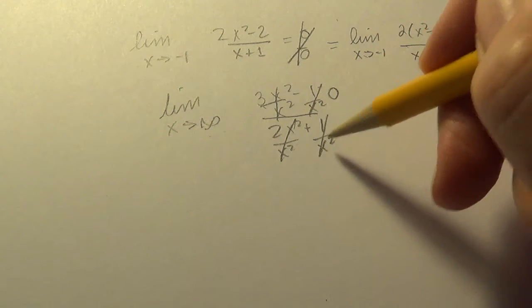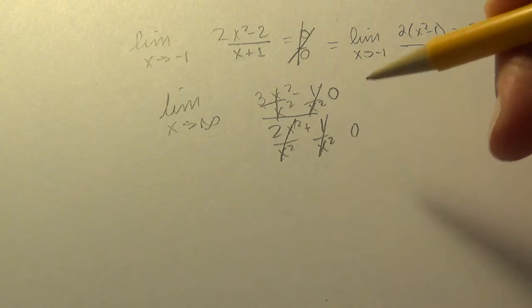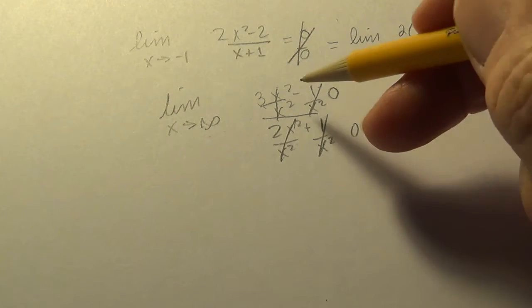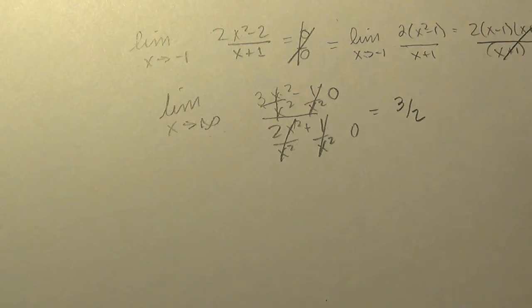So the little trick we had was divide each one by the greatest power of the variable in the denominator - sometimes in the numerator but usually the greatest power in the denominator. This one they're the same, so x squared over x squared.